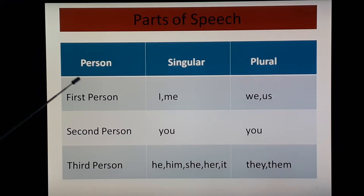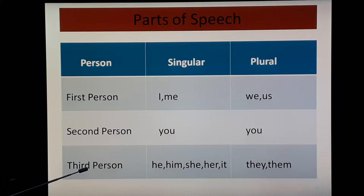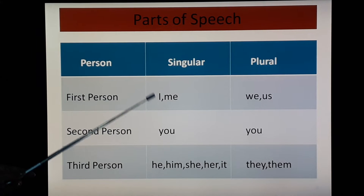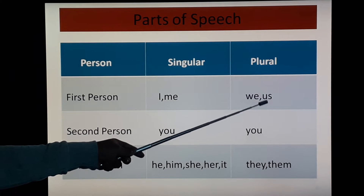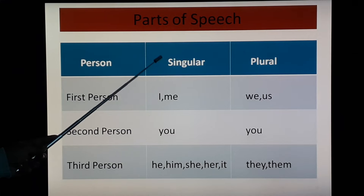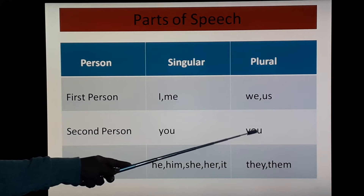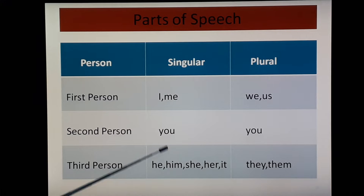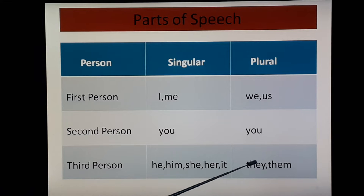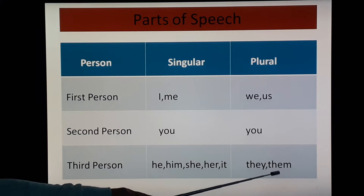I have organized pronouns according to singular, plural, first person, second person, and third person for better understanding. First person singular: I, me. First person plural: we, us. Second person singular and plural: you. Third person singular: he, him, she, her, it. When talking about an object, use him or her. Third person plural: they, them. 'They/he/she' is for subject; 'them/him/her' is for object.